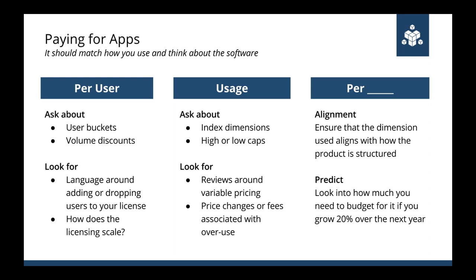There are other models based on the product or solution — based on some dimension that makes sense for the software, but make sure it aligns with value. One example from Appneta is licensing based on number of locations, since each one provides value as an endpoint representing a network edge you want to monitor from or to. When budgeting for any of these models, really determine what the scale factor is — what changes in your company will force you to buy more or less? Predict around 10 to 20% growth so you know what might happen to the budget.